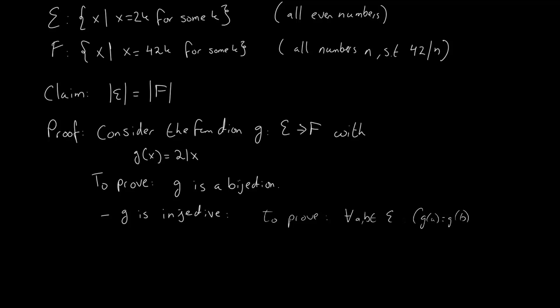In other words every point from E is mapped to a unique point of F. So how do we prove that? Well we take arbitrary a and b from the set E such that g(a) equals g(b).